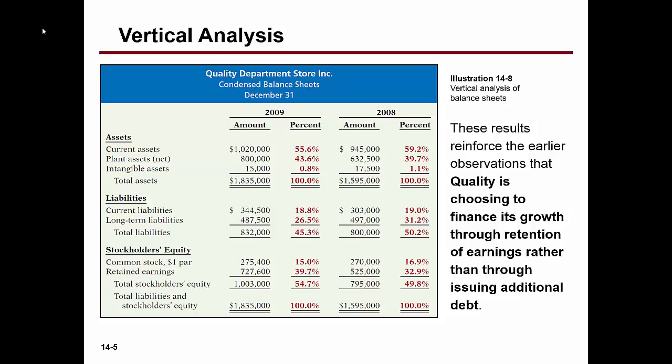Let's try current liabilities. Current liabilities are $344,500, and we're going to express that as a percentage of total liabilities and stockholders' equity — which also equals total assets. So take $344,500 and divide by $1,835,000. Does that give you 18.8%?